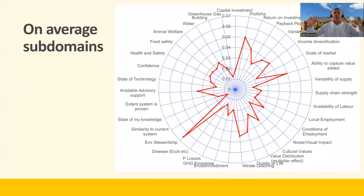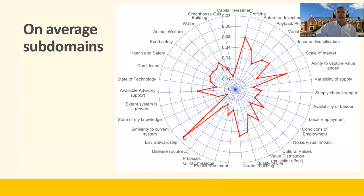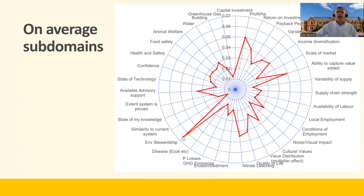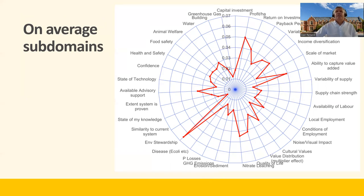We can break that down from the domain level to the sub-domain level to see how important specific factors were. We can see that environmental stewardship came out particularly strongly. We're not claiming this is representative of all land managers — we were looking at a particular set with particular challenges — but within that group, environmental stewardship was seen as especially important. We also see the ability to capture value added and profit per hectare coming through, giving some idea of what the important factors are on average for this group.